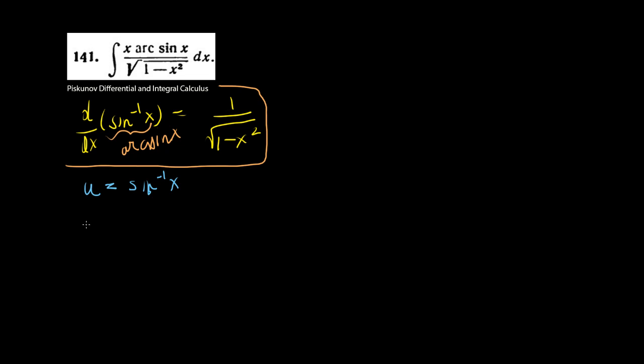We can take the sine of both sides, so we get sine of u is equal to x. Now from here I can take the derivative of both sides, so I get du is equal to 1 over square root of 1 minus x squared dx.